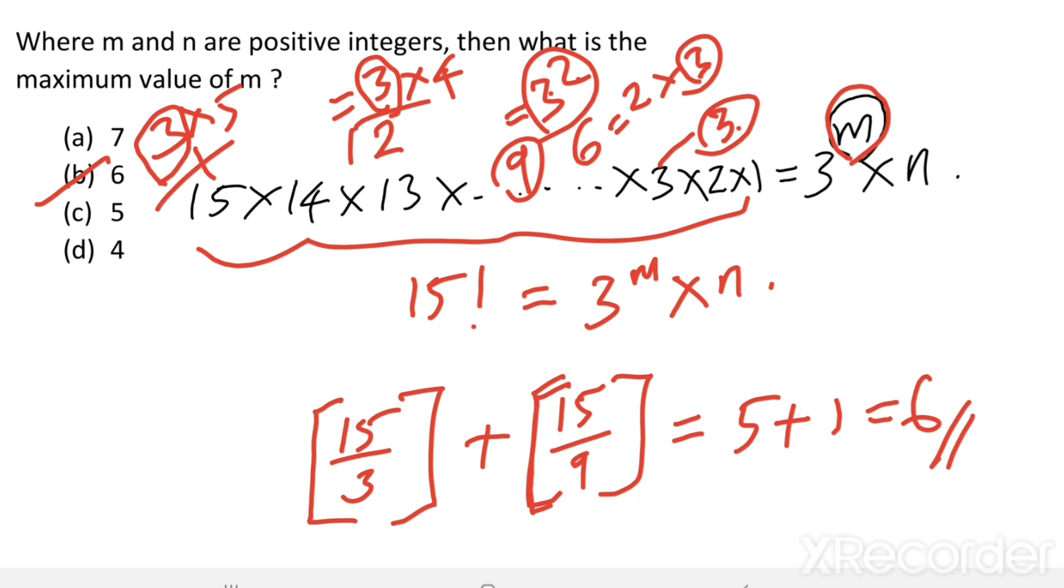Total, there are six 3s, so the maximum power of 3 equals 3^6. That is, the value of m equals 6. Option b is the right answer.